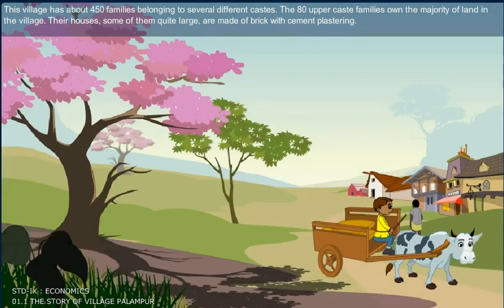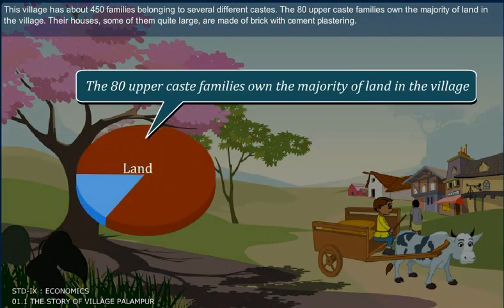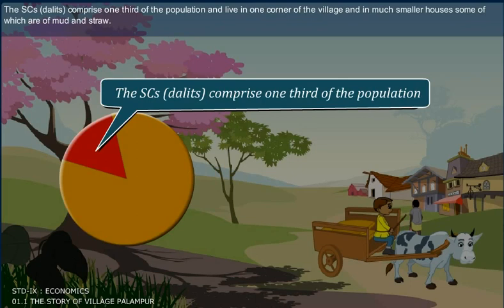This village has about 450 families belonging to several different castes. The 80 upper caste families own the majority of land in the village, and their houses are quite large, made of brick with cement plastering. The SCs, Dalits, comprise one-third of the population and live in one corner of the village in much smaller houses, some of which are of mud and straw.